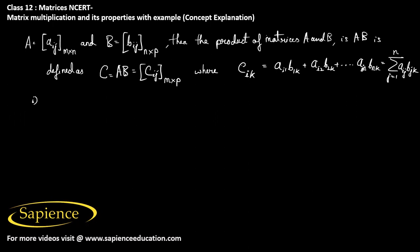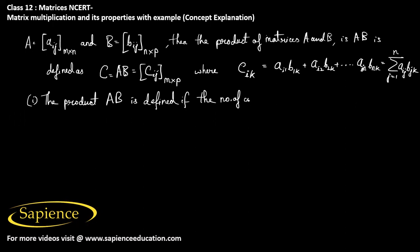The first rule is that the product AB is defined only if the number of columns in matrix A is equal to the number of rows in matrix B.